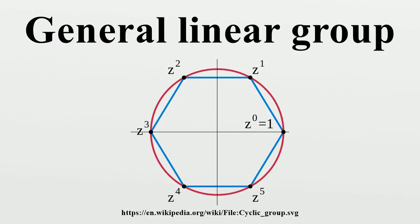Infinite general linear group: The infinite general linear group or stable general linear group is the direct limit of the inclusions GL(n) < GL(n+1) as the upper left block matrix. It is denoted by either GL(∞,F) or GL(F), and can also be interpreted as invertible infinite matrices which differ from the identity matrix in only finitely many places.